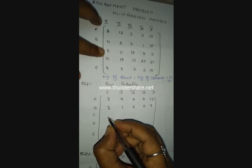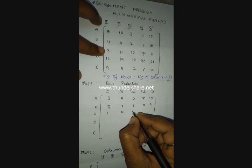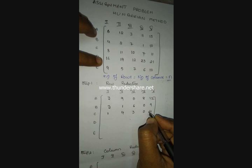For the third row, the minimum element is seven. So: eight minus seven is one, eleven minus seven is four, ten minus seven is three, seven minus seven is zero, and eleven minus seven is four.